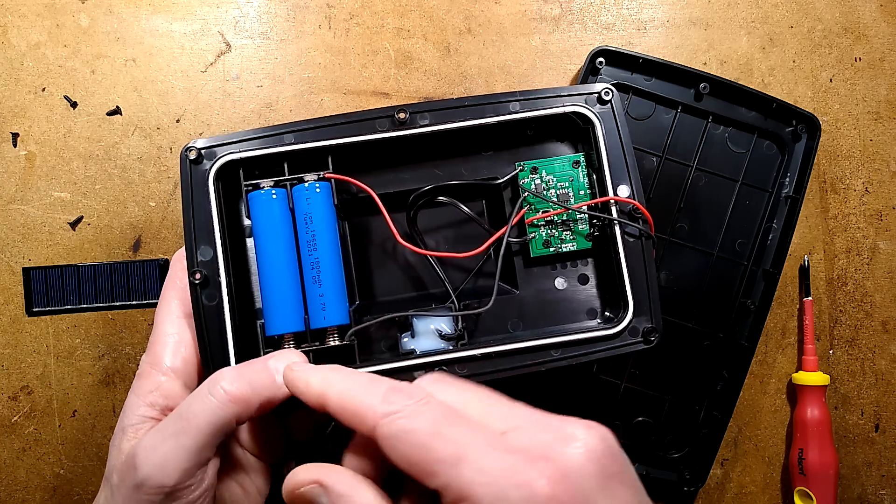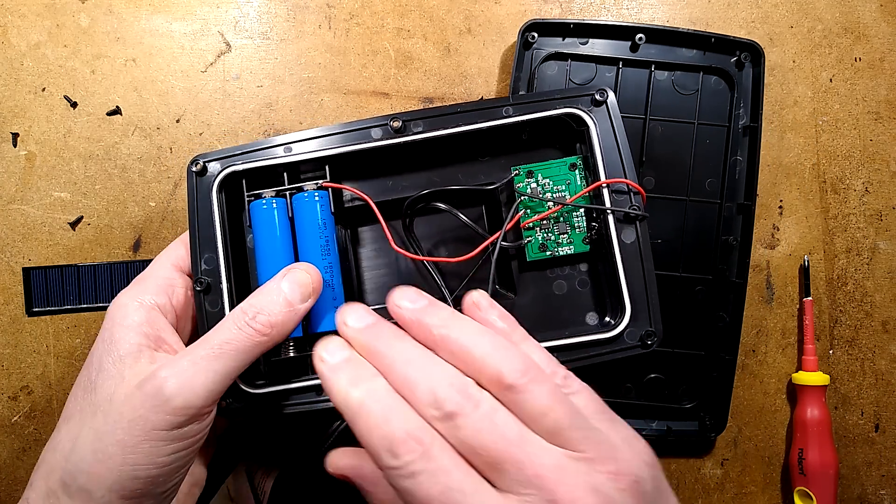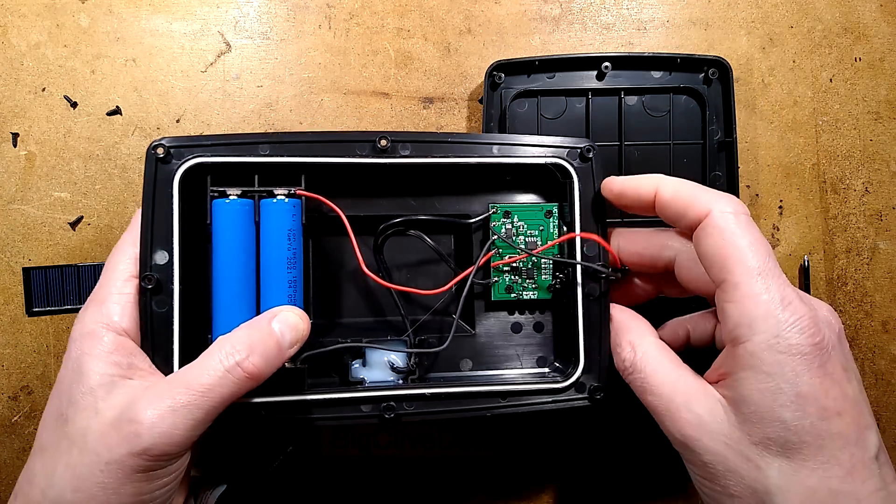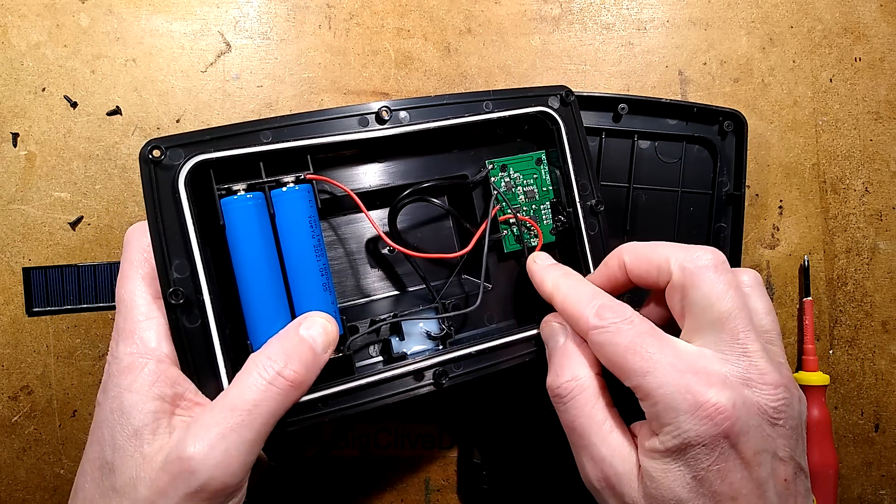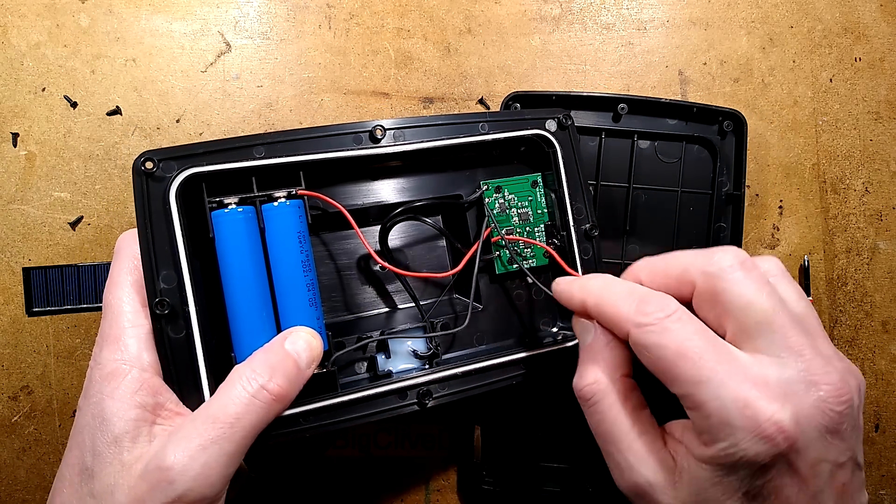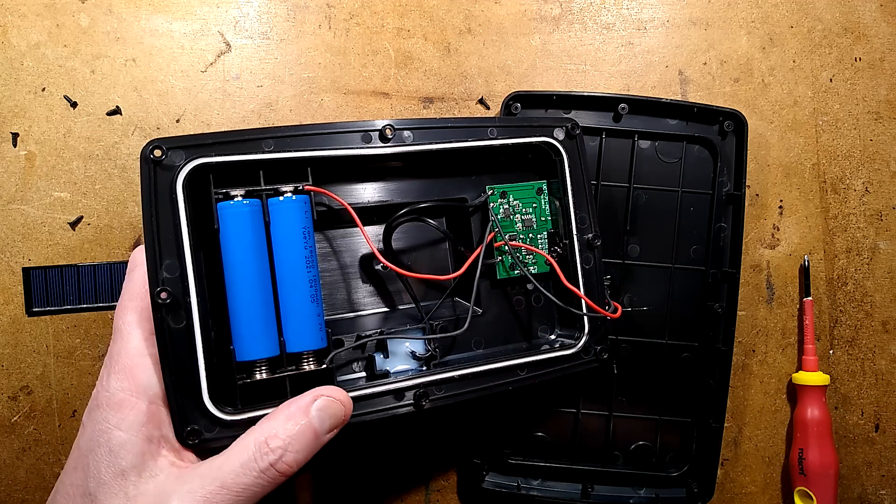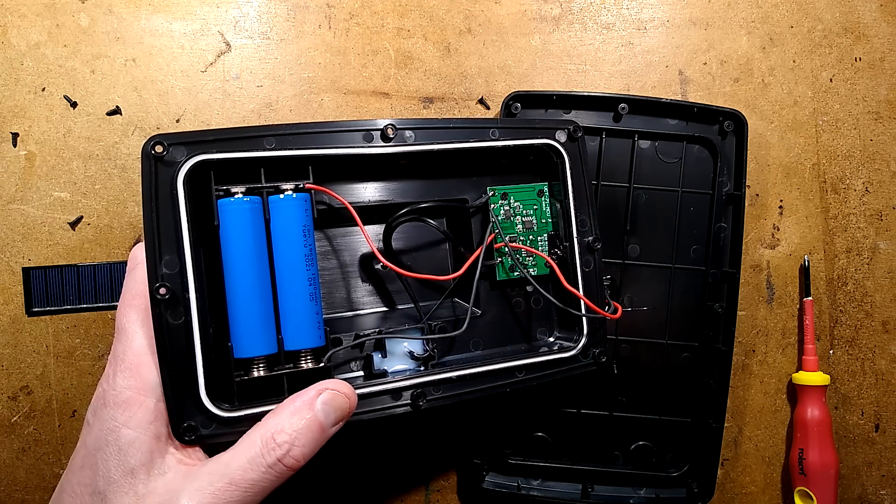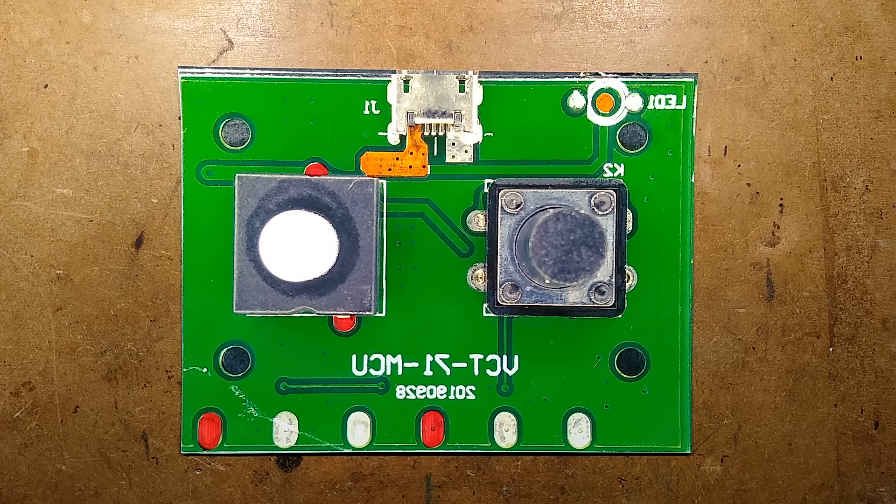These are 1800 milliampere cells, at least that's what's printed on them. It doesn't necessarily mean that's what it is. There's the circuit board. You know what happens now: I'm going to take the circuit board out, take a picture of it, reverse engineer it, and we can explore the circuitry.